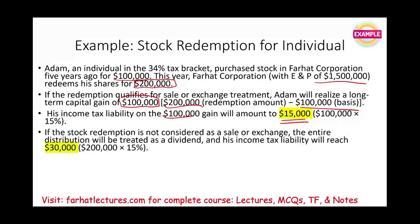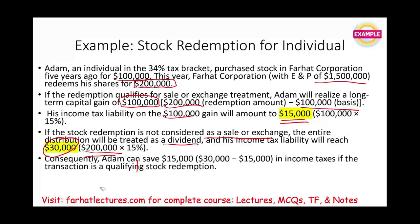If the stock redemption is not considered a sale — simply put, it's considered a dividend — the whole amount, the $200,000, is dividend, times also 15%, giving Adam a tax bill of $30,000. Adam can save $15,000 on income taxes if the transaction qualifies as stock redemption. The tax bill as a sale is $15,000; as a dividend it's $30,000.